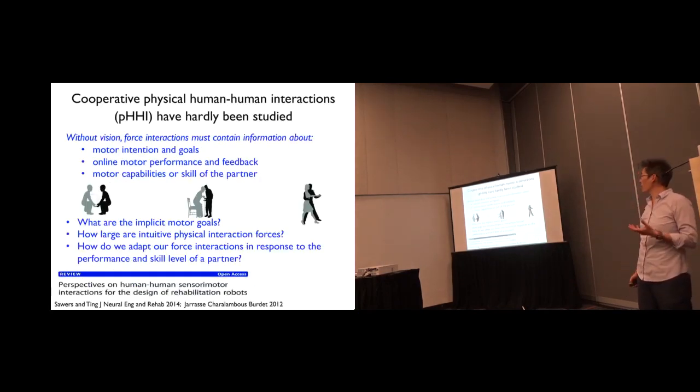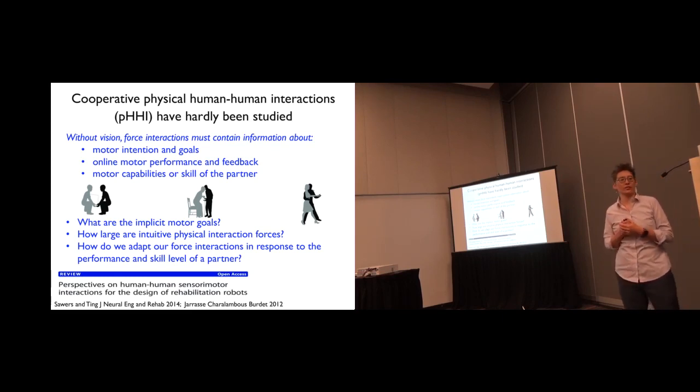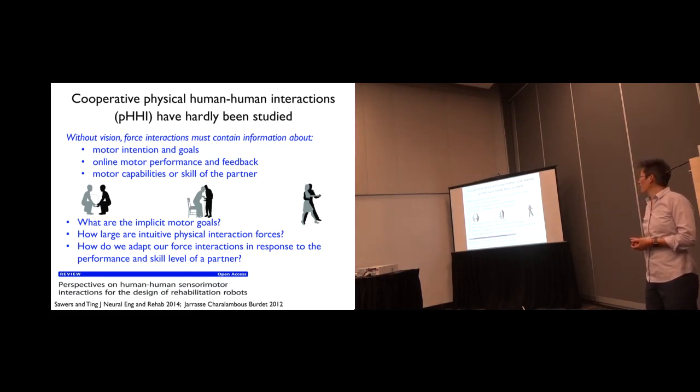So one of the things is that we wanted to look at cooperative human-human interactions. Since this is something we do all the time, we carry tables together, we help people stand up, we dance. And we thought we wanted to look at a behavior that didn't involve any visual feedback, so we're really only relying on physical human interactions. And this becomes very difficult to study because what are the goals when you're carrying a table together? Am I trying to increase my load, decrease, help the person? These are very difficult things to write down in an equation.